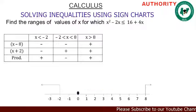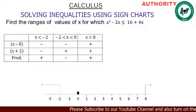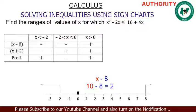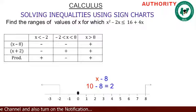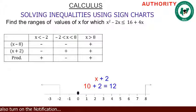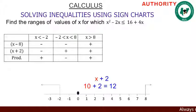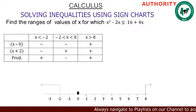For the last range — x greater than 8 — we pick ten. Ten minus 8 gives positive 2, so we have positive. Then ten plus 2 gives 12, so we have positive. Positive times positive gives positive, that is plus. Now let's go to the conclusion.